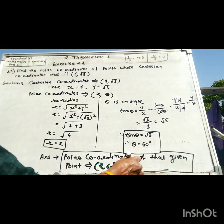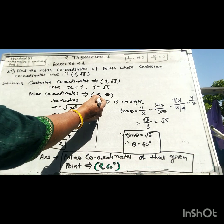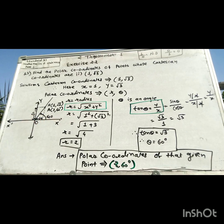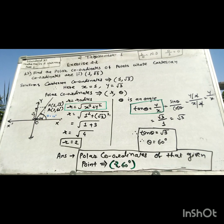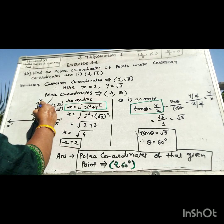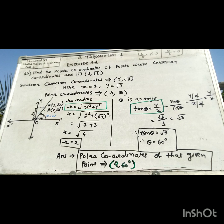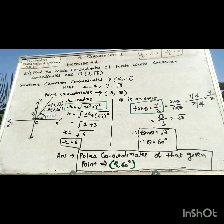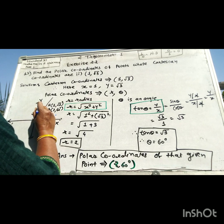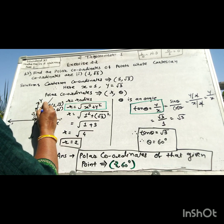Using the polar coordinates formula, theta is equal to 60 degrees, and the distance OA is R, where R is equal to 2.